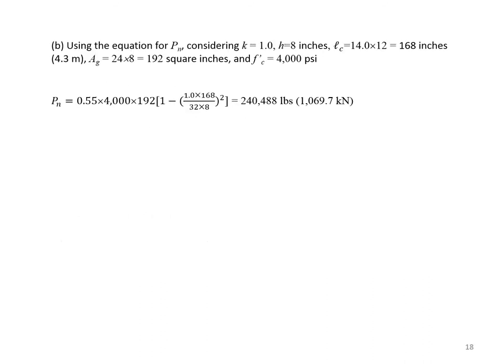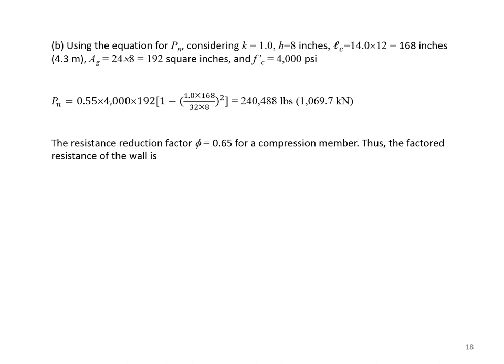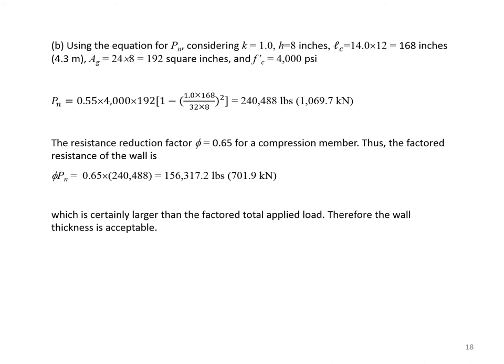Using the Pn equation with k = 1, h = 8 inches, Lc = 14 × 12 = 168 inches, Ag = 24 × 8 = 192 square inches, and f'c = 4,000 psi, we get Pn = 240,488 pounds. With φ = 0.65, the factored resistance φPn = 156,317.2 pounds, which is certainly larger than the factored applied load of 9,060 pounds. Therefore, the wall thickness is acceptable.